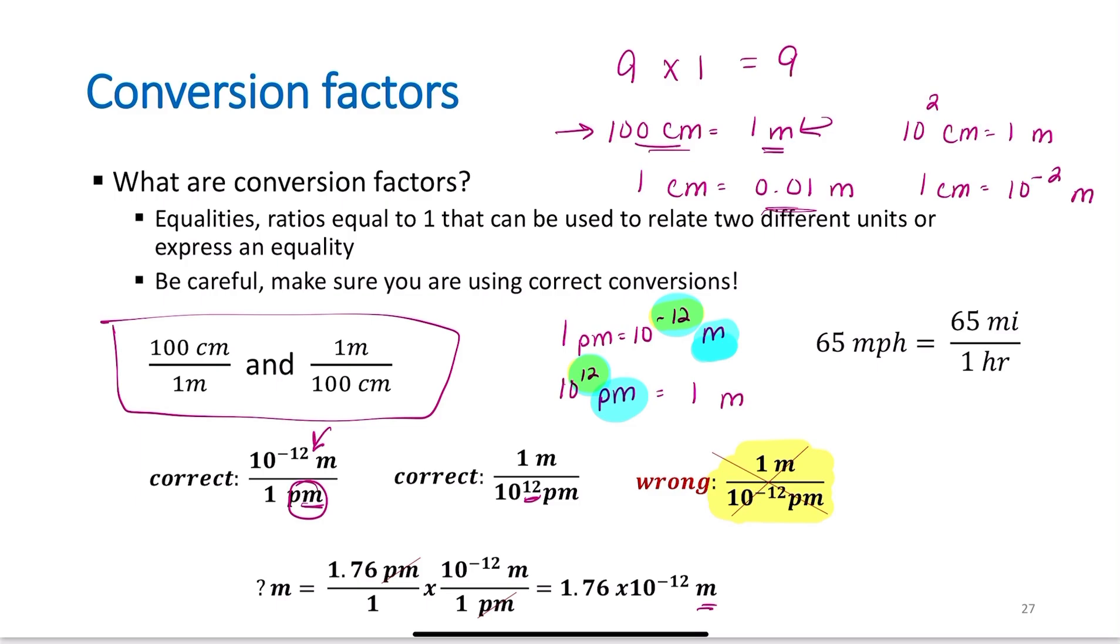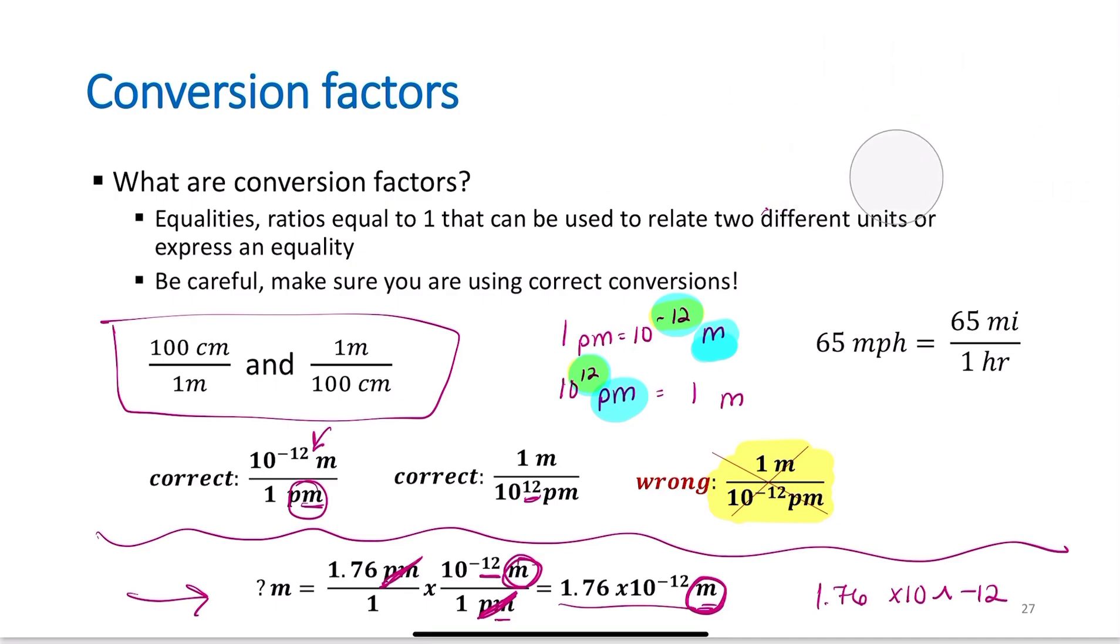Here's an example. Let's say we're trying to find the number of meters if we have 1.76 picometers. This is just one way to set it up - I'll write other ways in a second. I'm trying to find meters. I know it's 1.76 picometer. I know 10 to the negative 12 meters equals one picometer. So picometers cancel out numerator and denominator. I'm left with meters in my numerator, which is what I'm trying to find. Then I do my calculation: 1.76 times 10 to the negative 12.